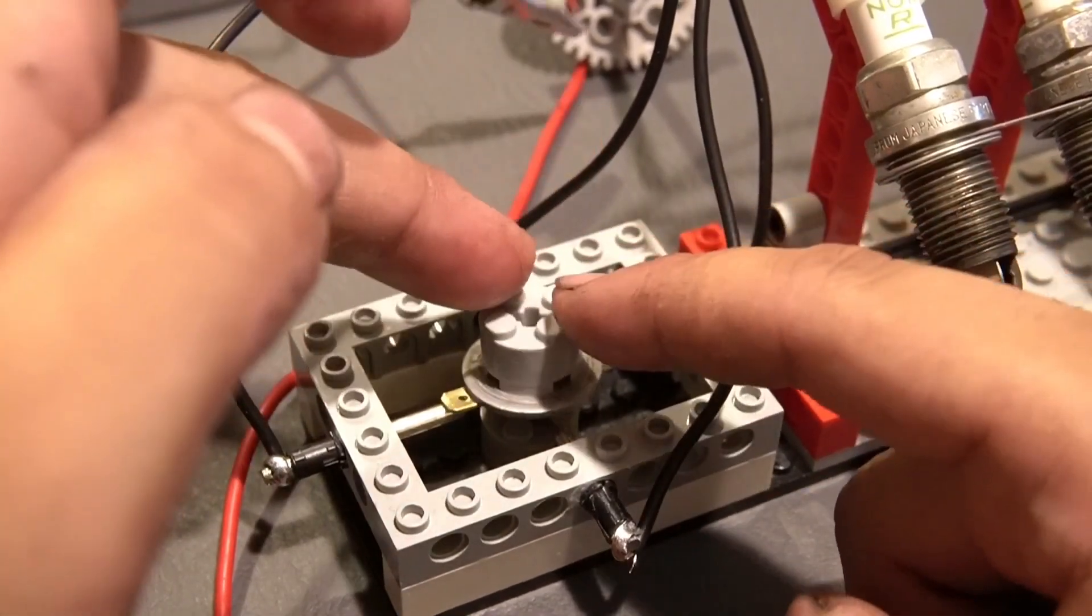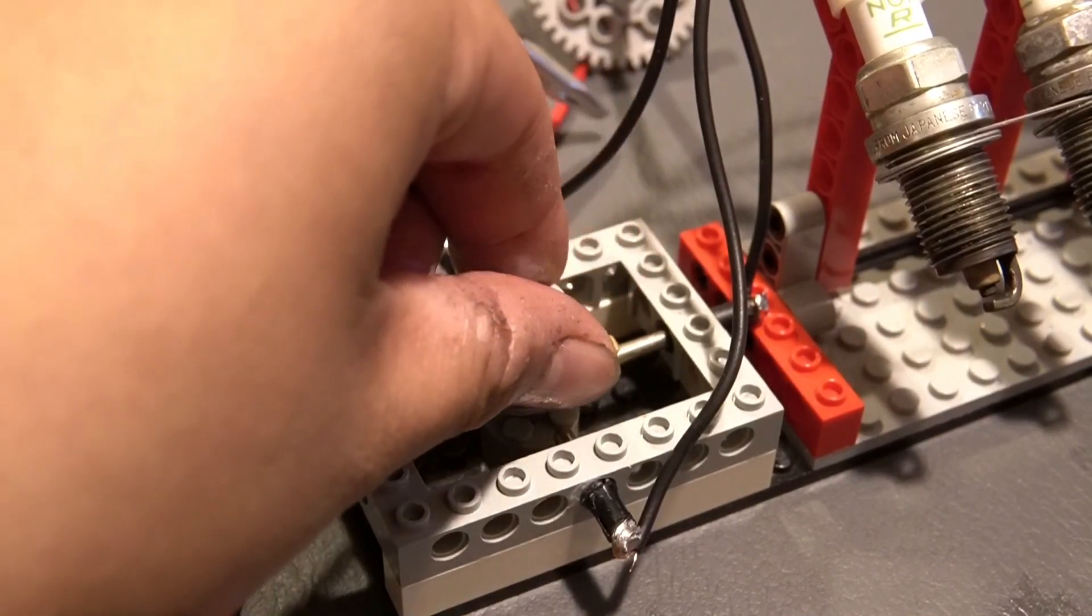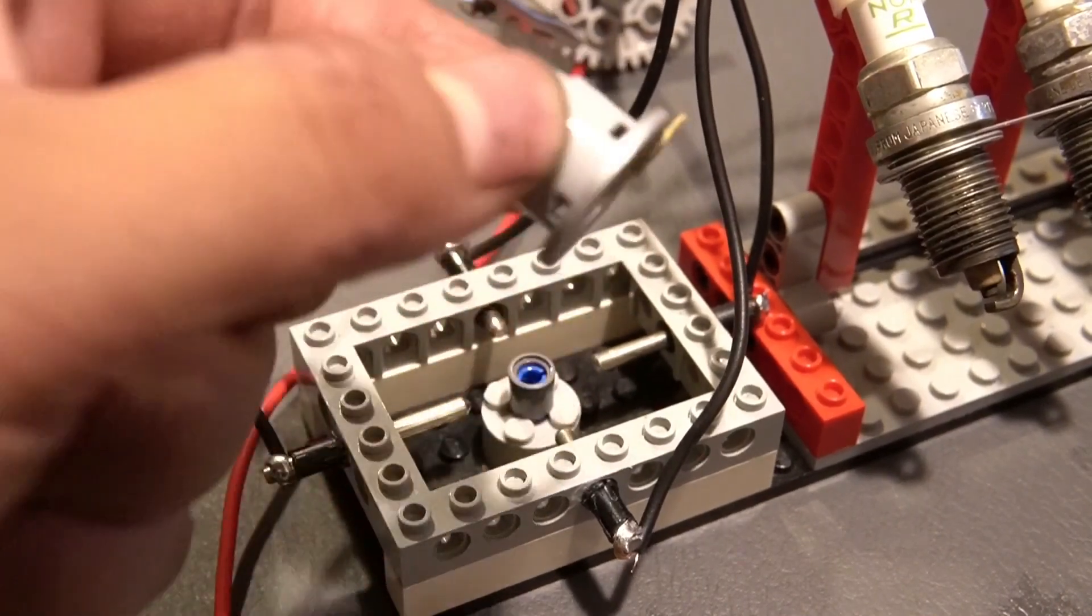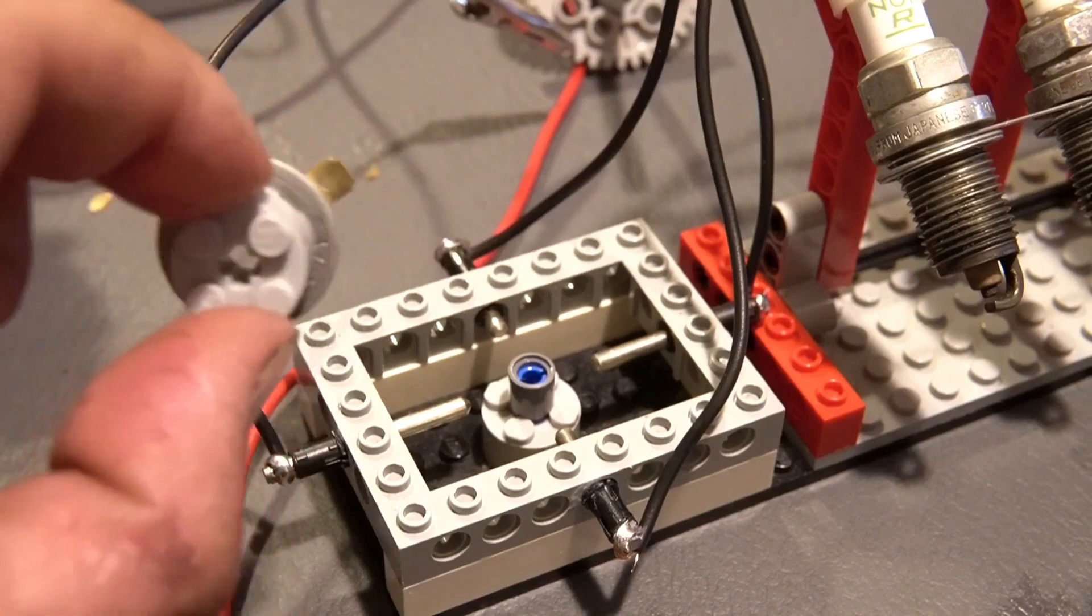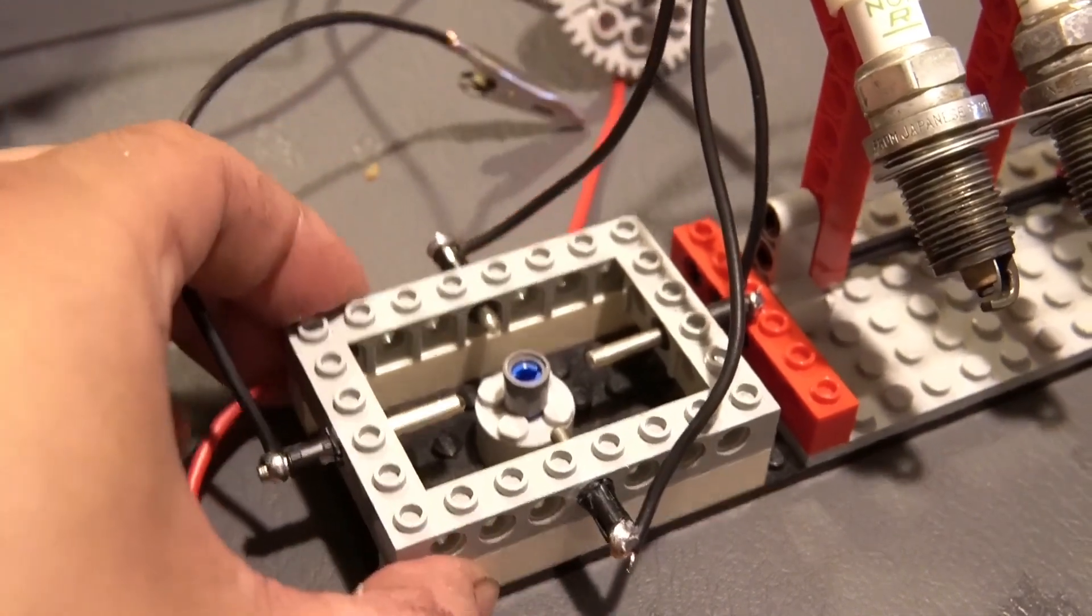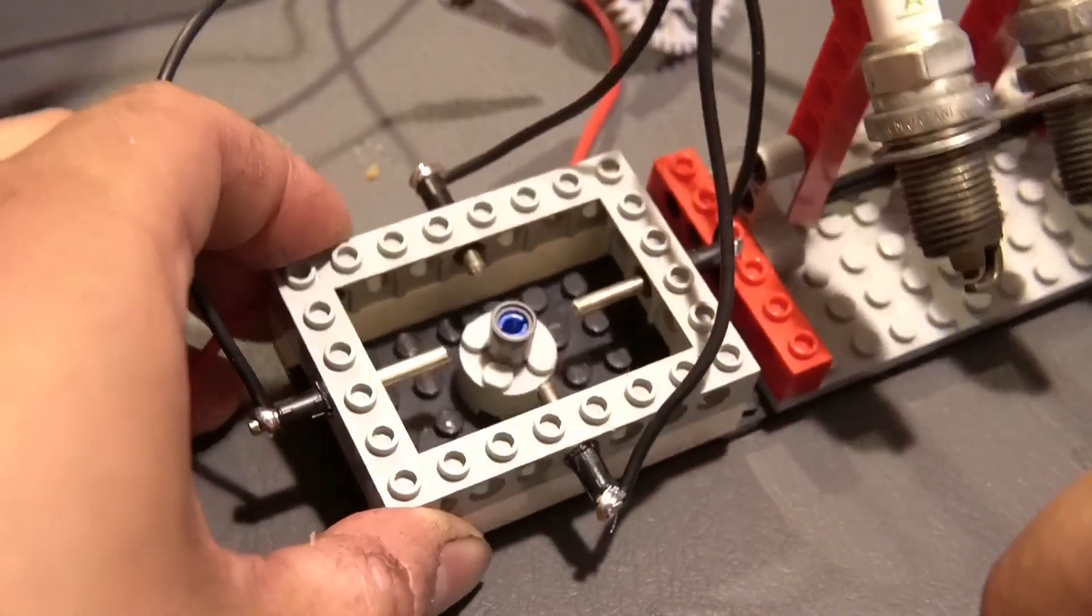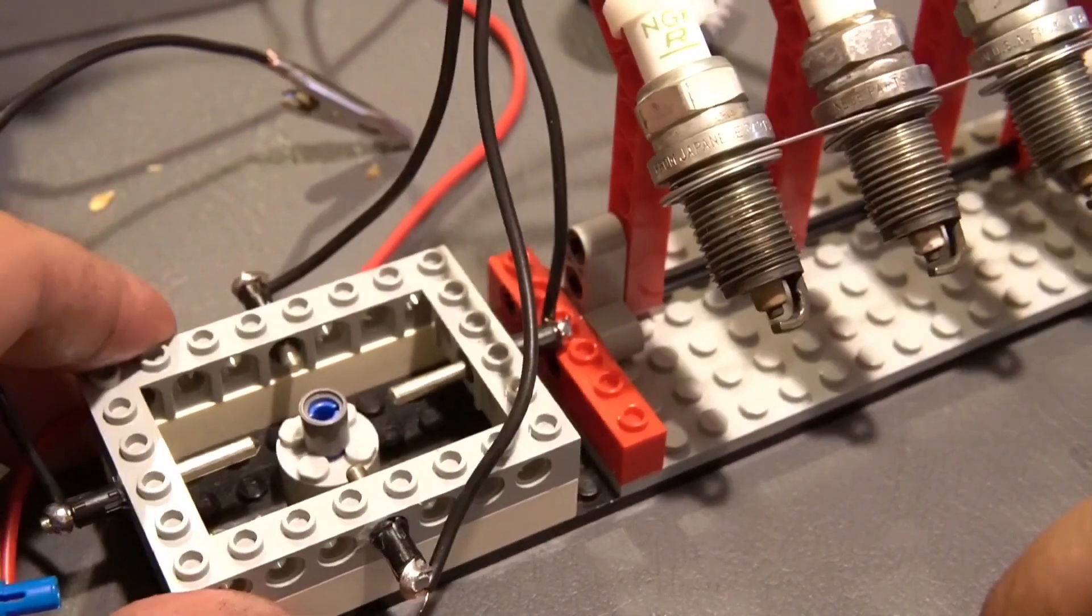And you can notice that there is a finger on the end of the ring. Now that finger eventually lines up with the four contact points that surround it. Now those contact points have protruding wires on the other side, which directly connect them to their own individual spark plug.